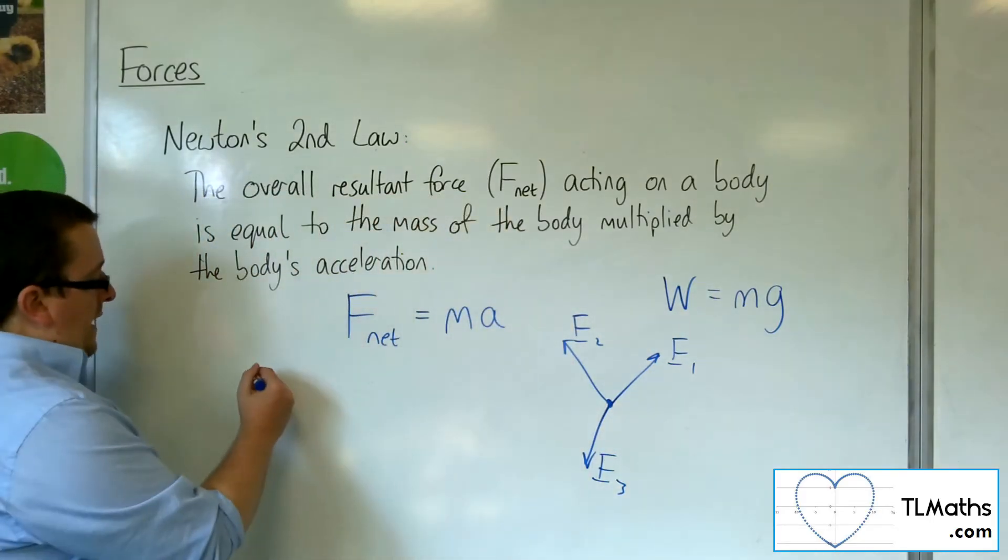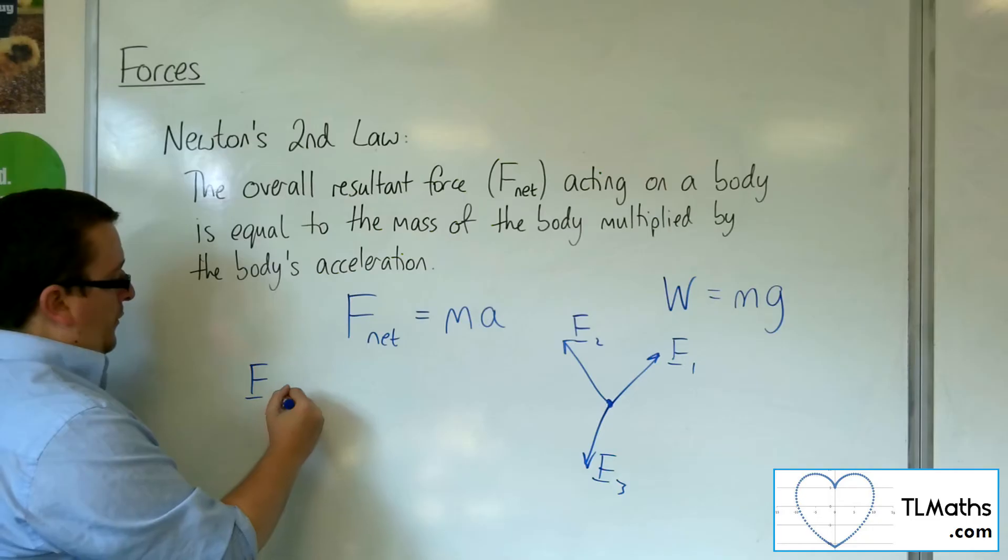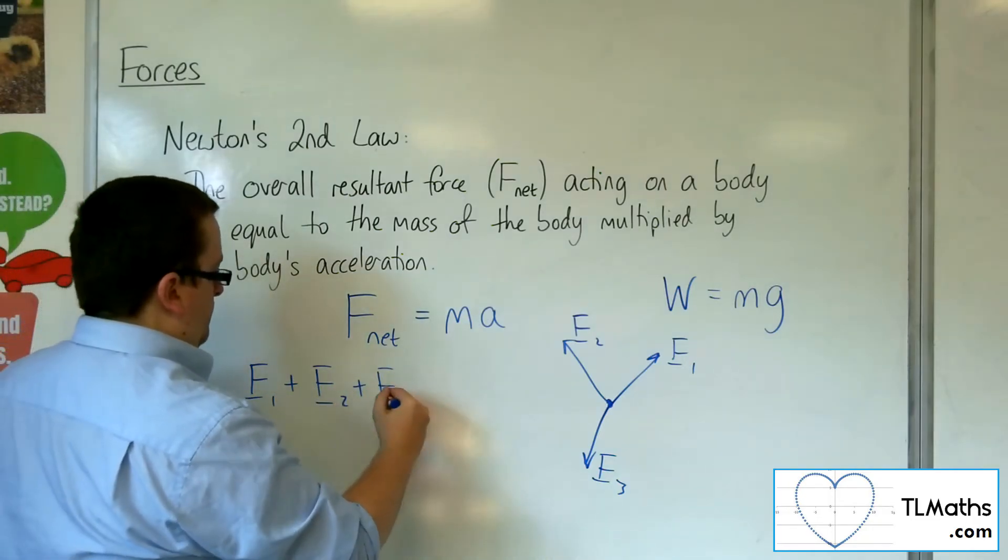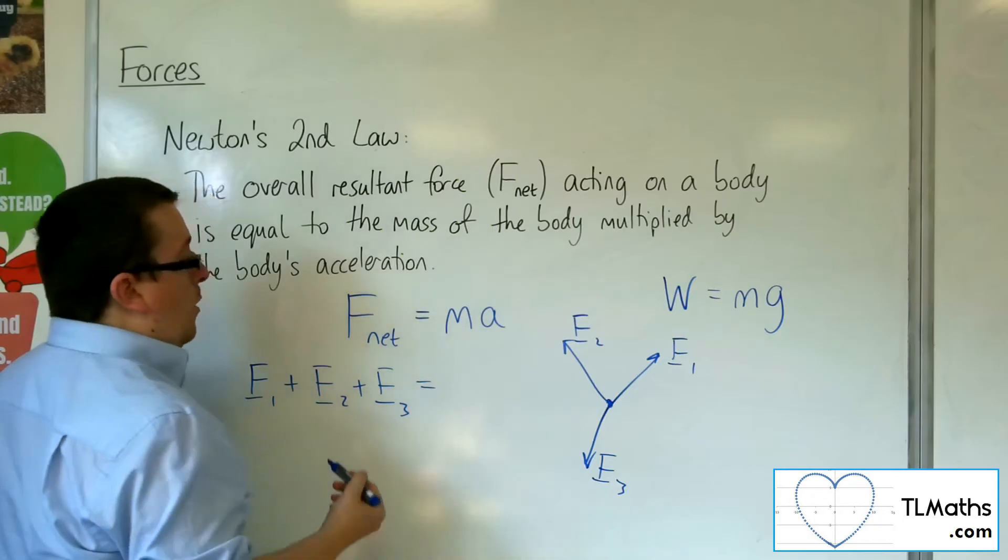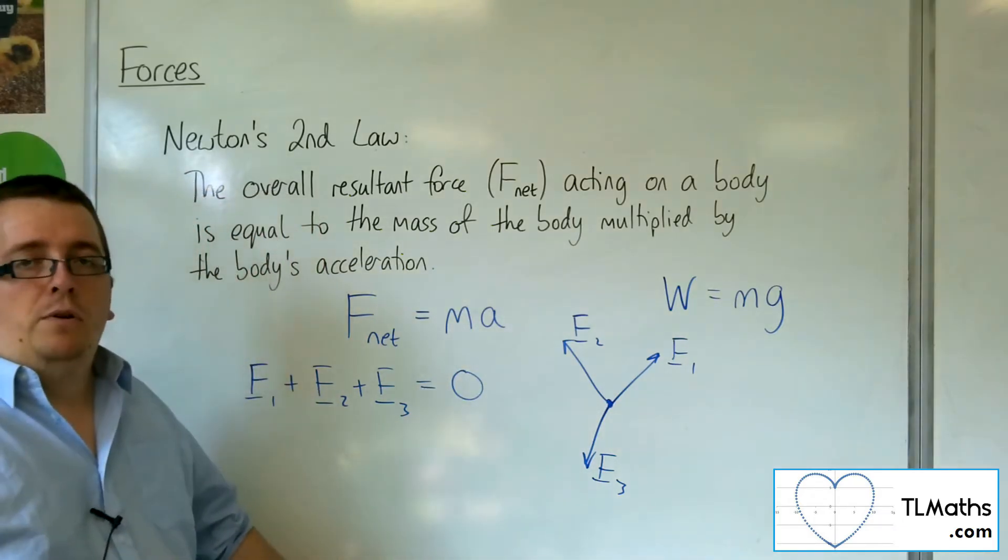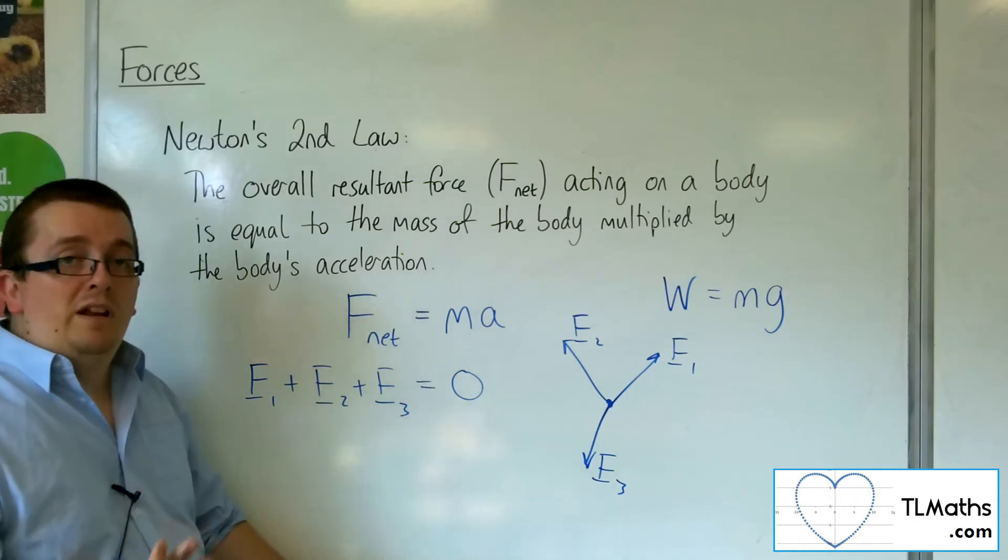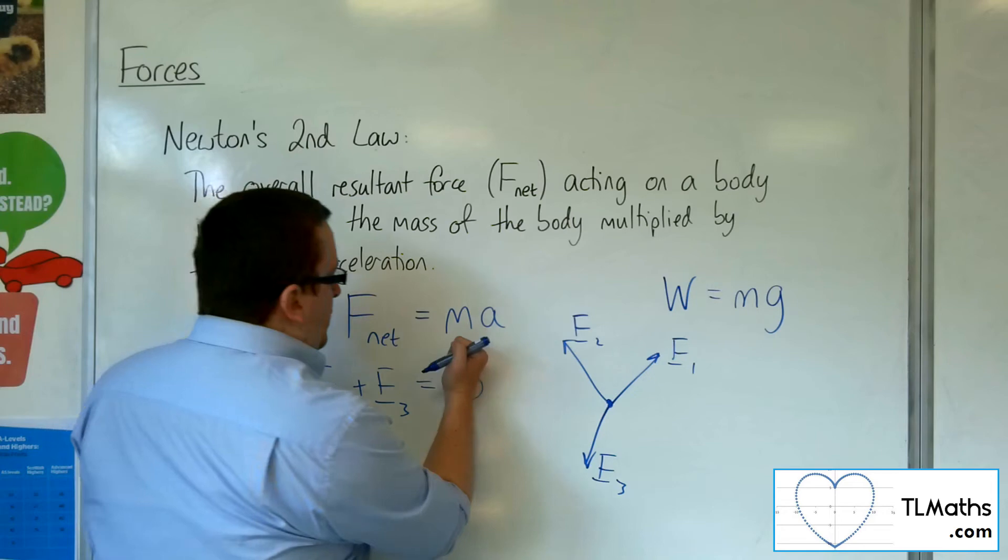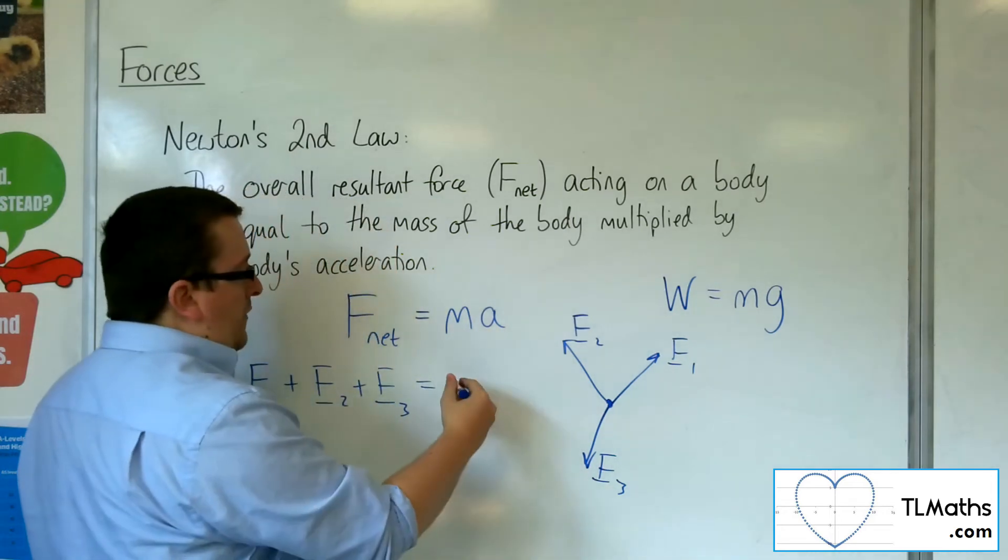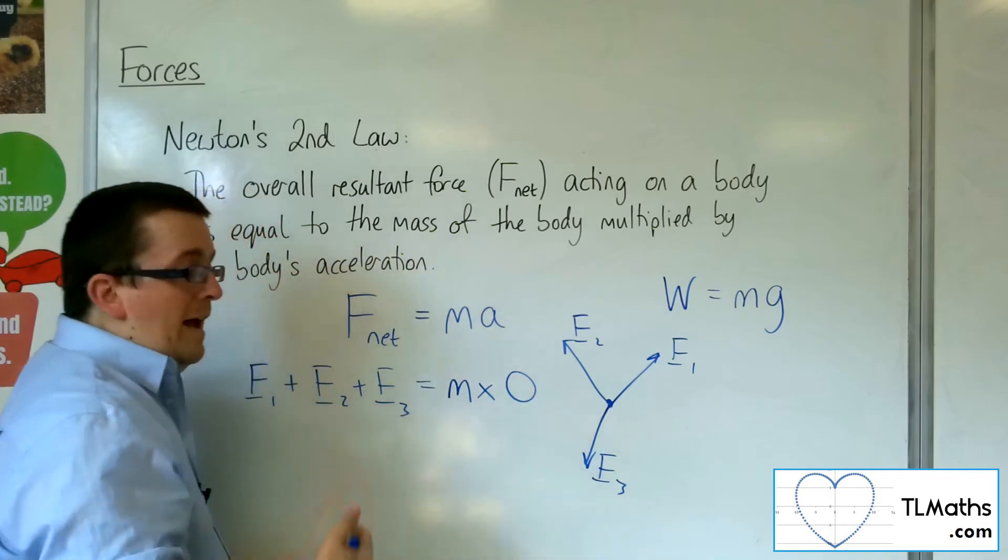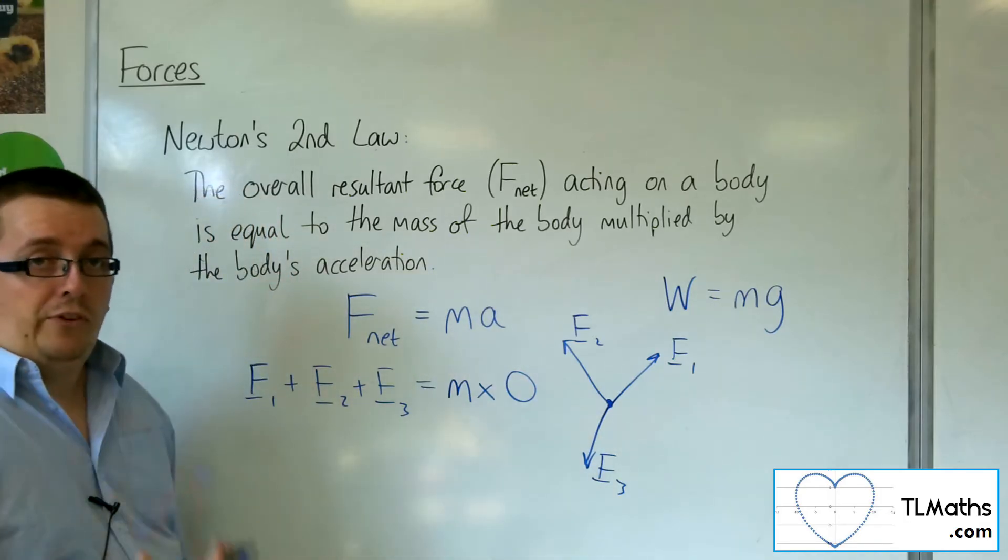So what we were saying then is we were adding up those three forces, and what we were getting was zero. And we were putting it equal to zero because the particle was in equilibrium, which is when the acceleration is zero. So in actual fact, the right-hand side of our equation has actually always been the mass of the particle times zero.